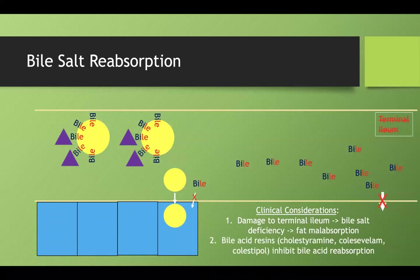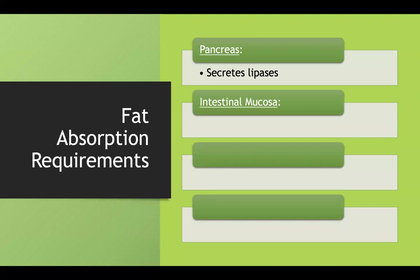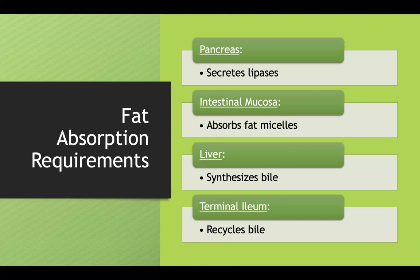Bile acid resins such as cholestyramine, colesevelam, and colestipol inhibit bile acid reabsorption, which would ultimately lead to fat malabsorption — but this is intentional when used as medication for hyperlipidemia. When evaluating fat malabsorption, consider multiple possible causes: pancreatic insufficiency (not enough lipases), damaged intestinal mucosa, liver not synthesizing bile, or a damaged terminal ileum impairing bile recycling through enterohepatic circulation.